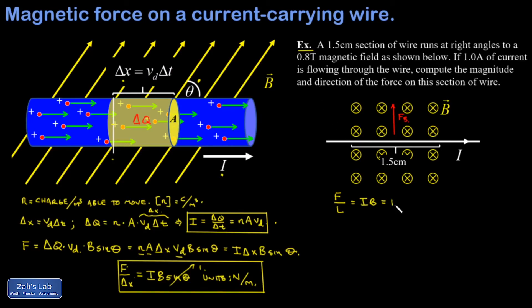And I get 1 amp times 0.8 teslas, which gives me 0.8 newtons per meter for the force per unit length.